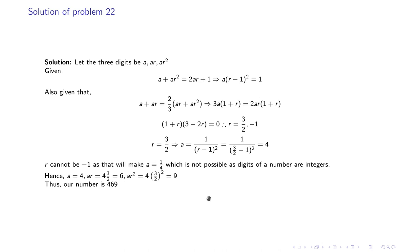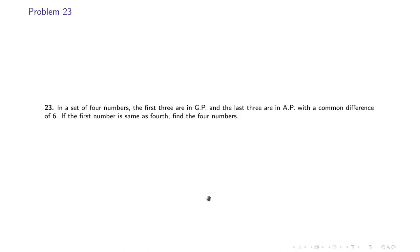With r = 3/2, we get a(3/2 − 1)² = 1, so a(1/4) = 1, meaning a = 4. With a = 4 and r = 3/2, the digits are 4, 6, and 9, so the number is 469.